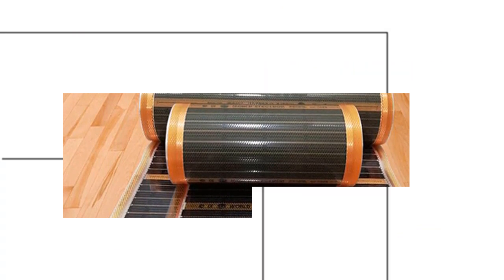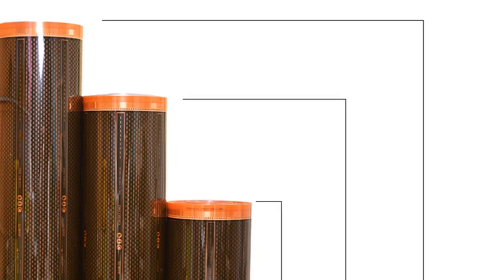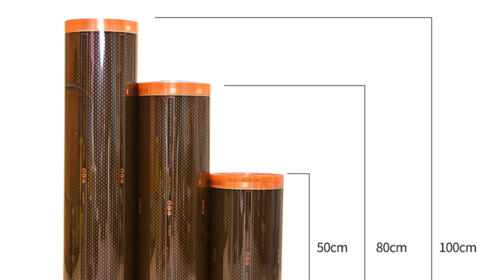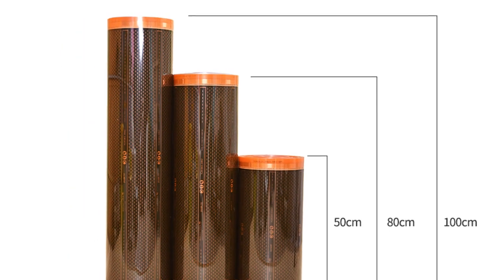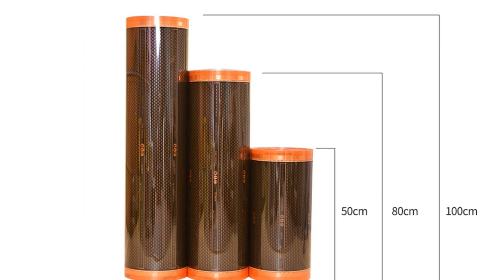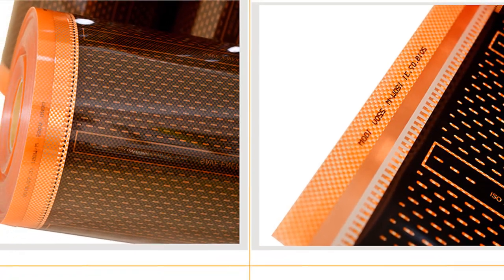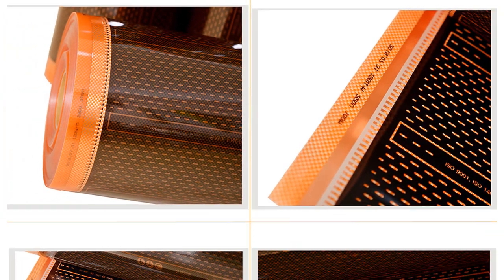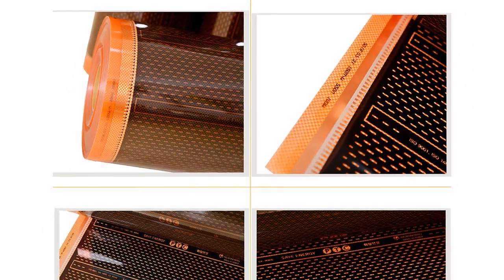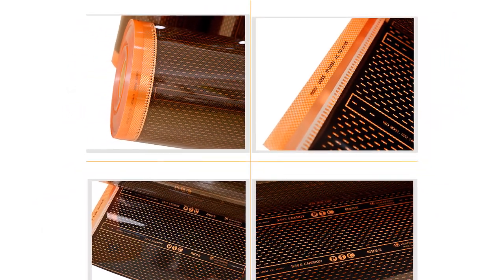Graphene PTC heating film is a new type of flooring that can be used with radiant heat. This type of flooring has many benefits over traditional flooring materials. For one, graphene PTC heating film is much more durable than traditional flooring materials. Additionally, this type of flooring is also much more efficient at conducting heat. Finally, graphene PTC heating film is also much safer to use than traditional flooring materials because it does not emit any harmful chemicals or gases.